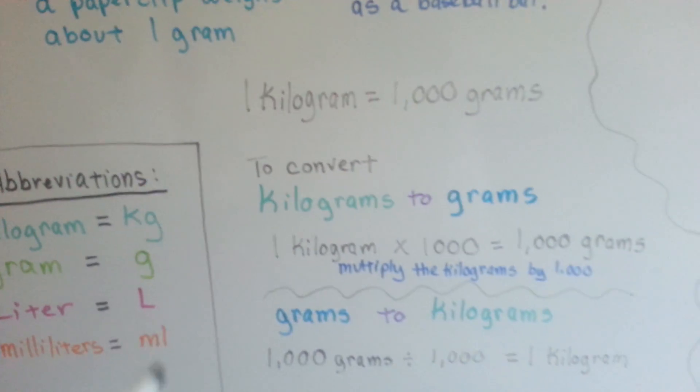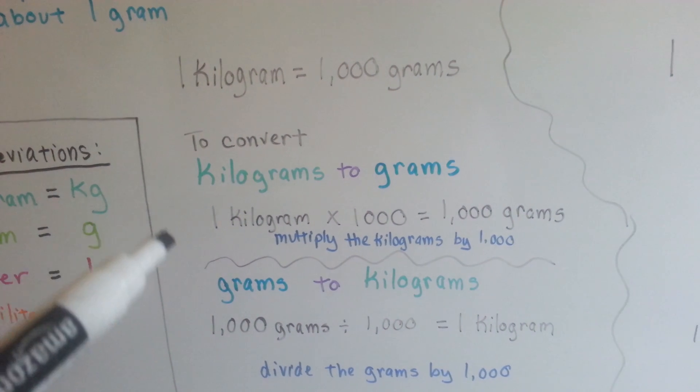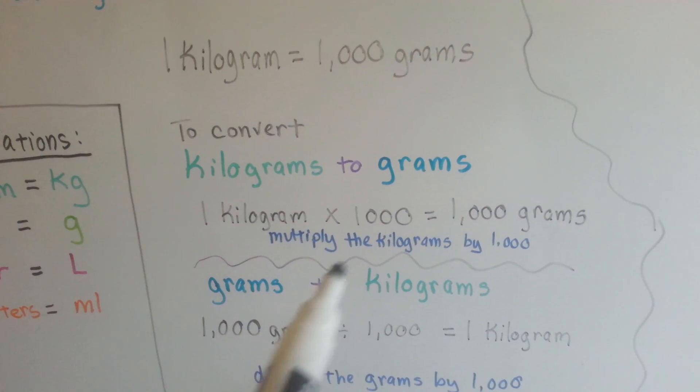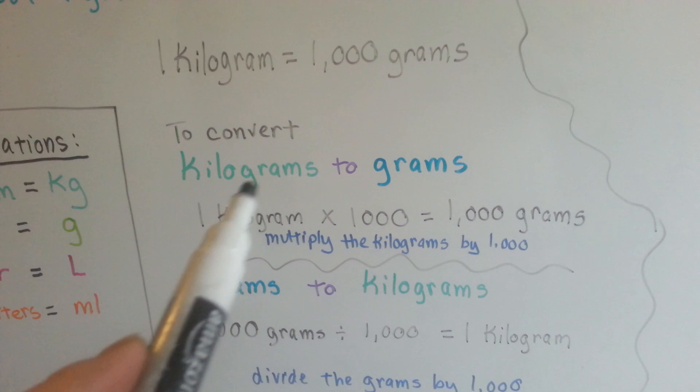When we want to convert kilograms to grams, we multiply by a thousand. Because there's a thousand grams for every kilogram.